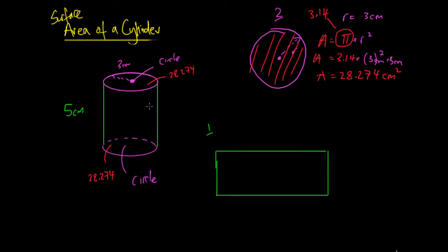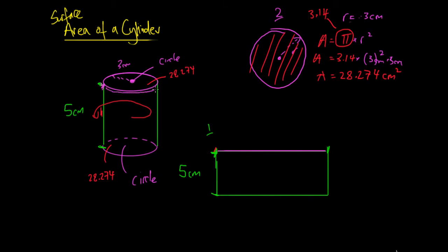The second thing we need to do is look at the middle section. If we wrap this rectangle around into a circle we get the cylindrical shape, so this rectangle is just the section in the middle. We can see from the diagram that it's going to have a height of 5 centimeters. What we don't know yet is this other distance — the width of the rectangle.